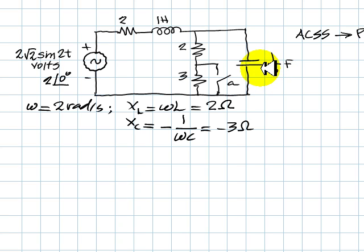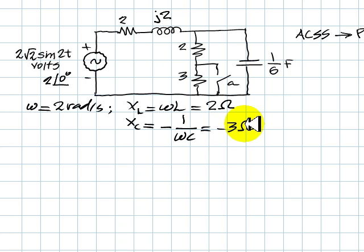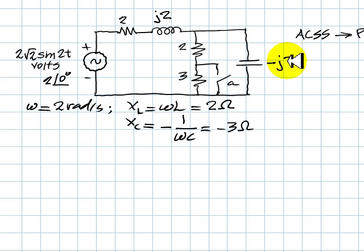Let's draw this circuit in the phasor domain. Instead of the 1-henry inductor, we have its impedance J2 ohms. Instead of the capacitor, we have its impedance −J3 ohms. The question is: what is the voltage in the capacitor, Vc, with this polarity, for t greater than 0?